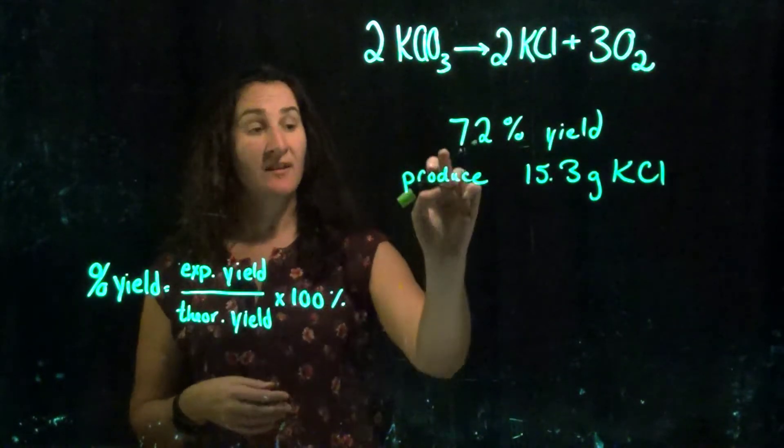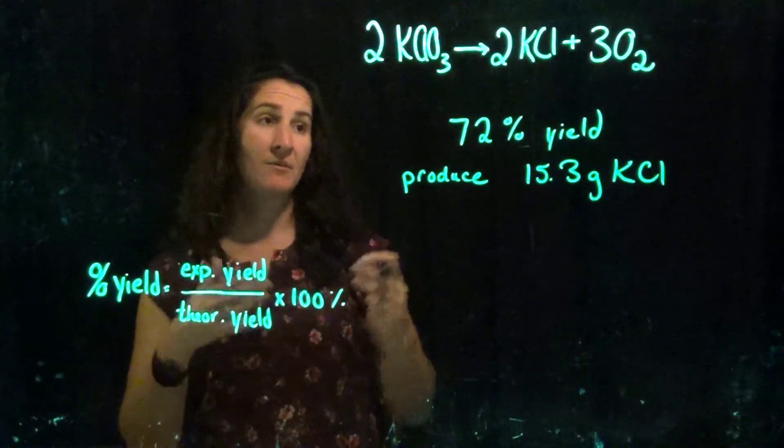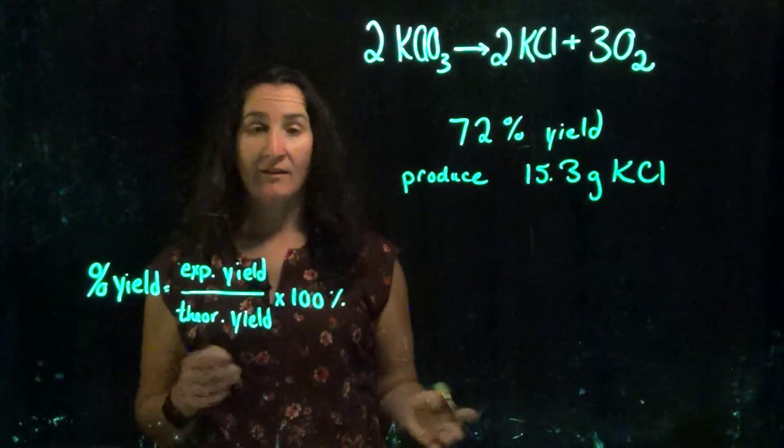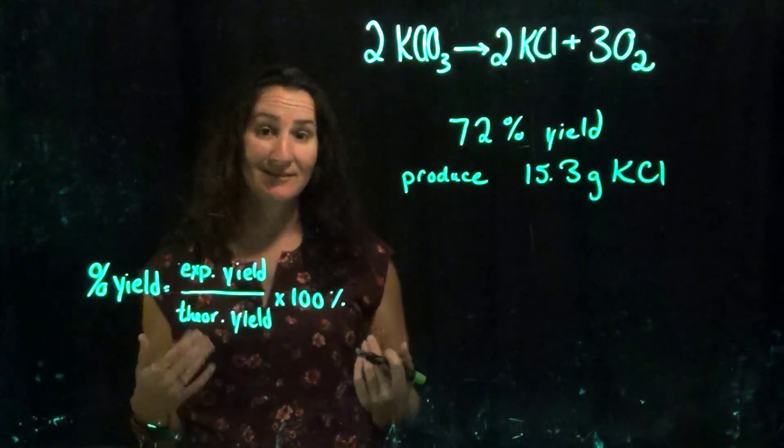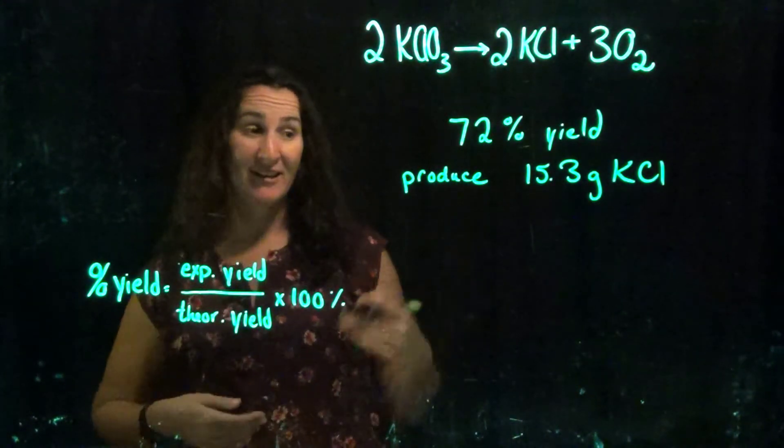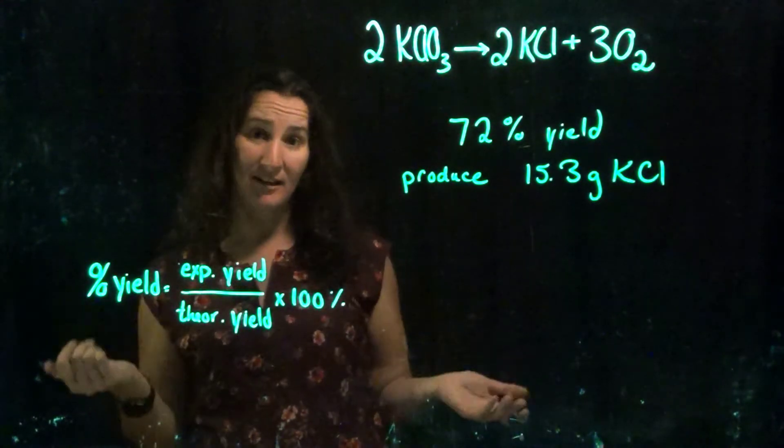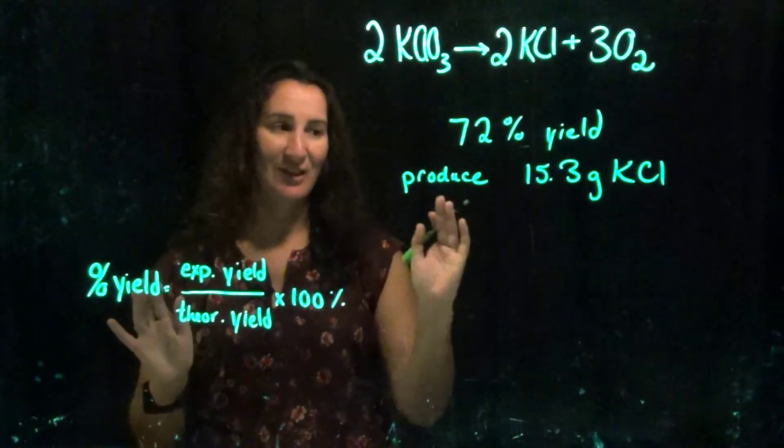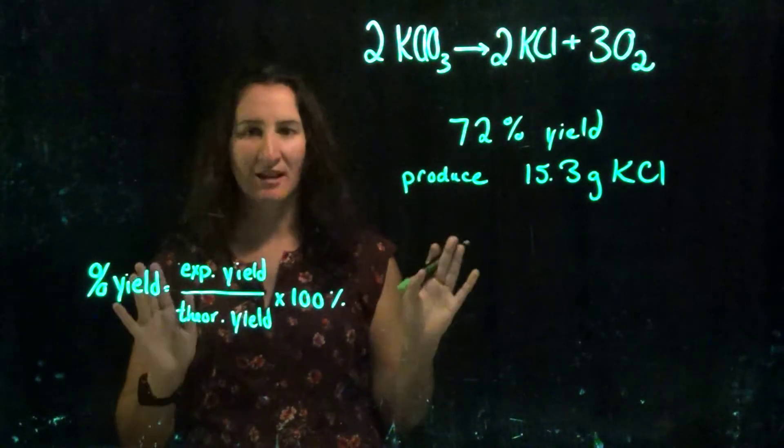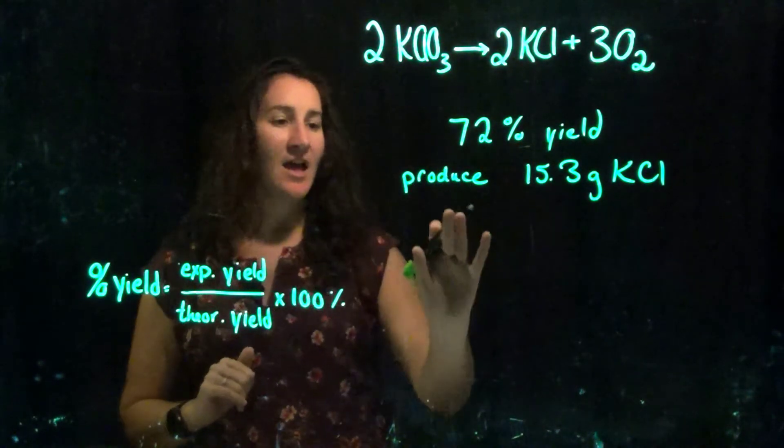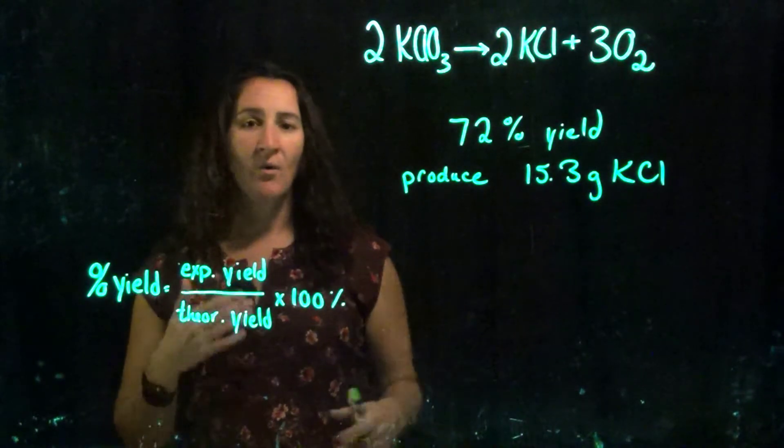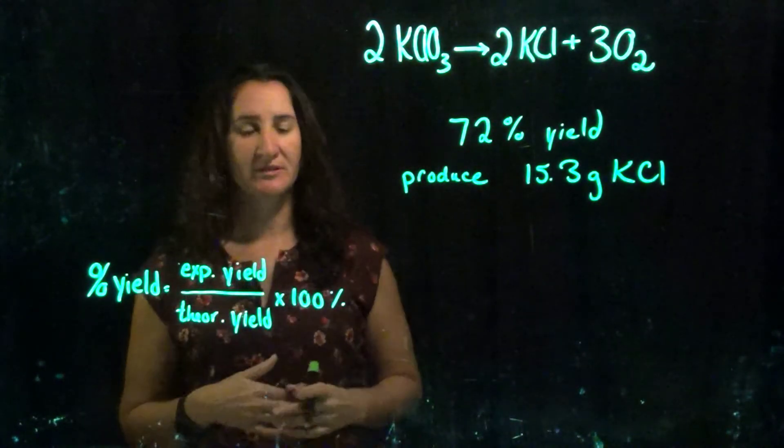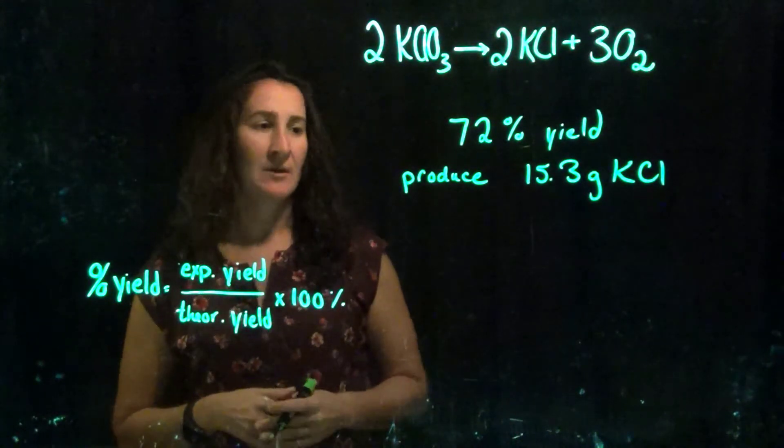In this next example, we are given our percent yield. So we maybe know that this reaction always has a 72% yield, or that's more common. And so maybe I'm testing, are my lab skills up to snuff? Am I going to produce less than that, more than that, et cetera? And so if I were to get the industry standard maybe of 72% yield for this reaction, I just made that number up. If I'm going to produce 15.3 grams, what then would the theoretical yield have been if I hit that 72% mark right on the head?